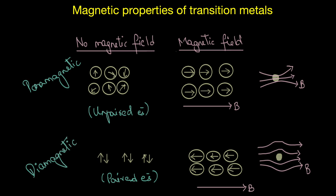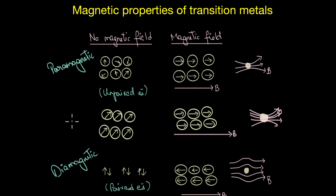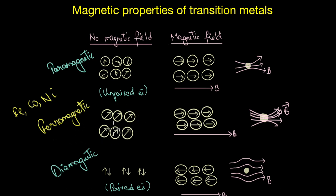In addition to these two, we have one more type called ferromagnetic materials. These are materials that are very strongly attracted to the magnetic field. Iron, cobalt, and nickel are ferromagnetic in nature. In fact, we can say that ferromagnetism is an extreme form of paramagnetism.